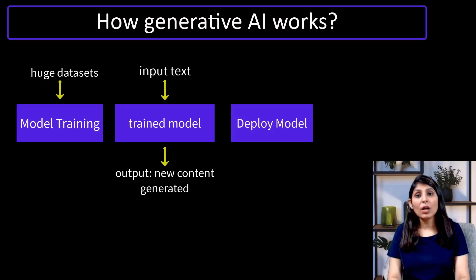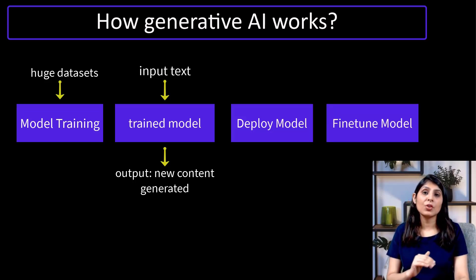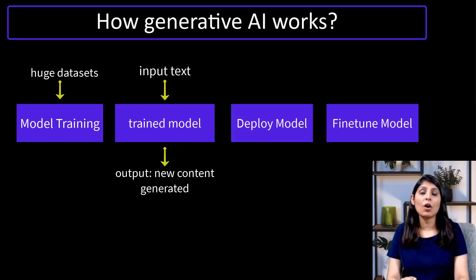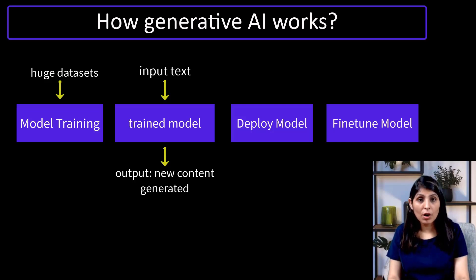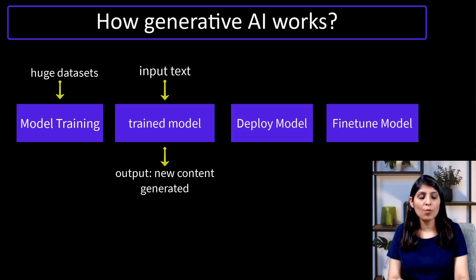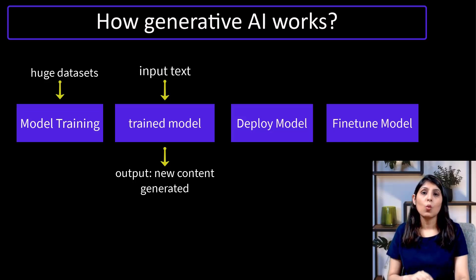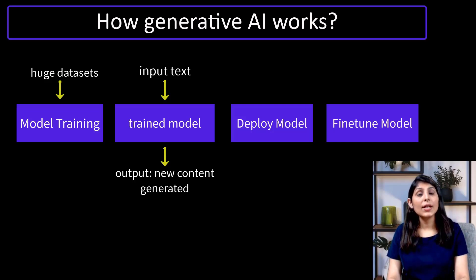We can also fine-tune generative AI models. Fine-tuning means adjusting the model for a specific use case, and with fine-tuning we can improve the model's performance in particular areas. This fine-tuning process involves training the model on smaller, task-specific datasets while keeping the pre-trained knowledge intact.